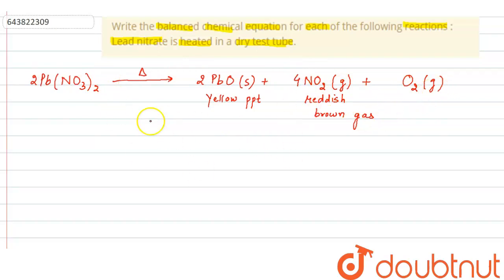It gives 2PbO plus 4NO2 plus O2. Now it is a balanced equation. In a balanced equation, the number of atoms of each element are equal on both the reactant and product side.